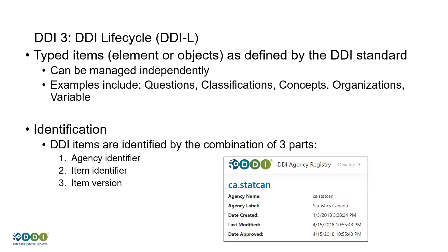Together, those three things — agency, ID, and version — make up the identifier for any piece of metadata: every question, every classification, every node in every classification, every concept, every organization, every variable. This identification scheme is actually identical to the one used in SDMX, and that's not coincidental. It's a very good way of producing identifiers for managed metadata. But if you can't identify something, you can't reference it.